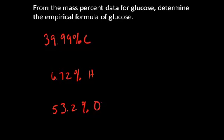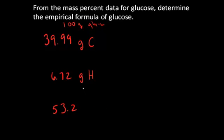In order to determine the empirical formula for glucose, let's assume that we have a 100 gram sample of glucose. With these given mass percentages, I can say that I must have 39.99 grams of carbon in my 100 gram sample, 6.72 grams of hydrogen in my 100 gram sample, and 53.2 grams of oxygen in my 100 gram sample.